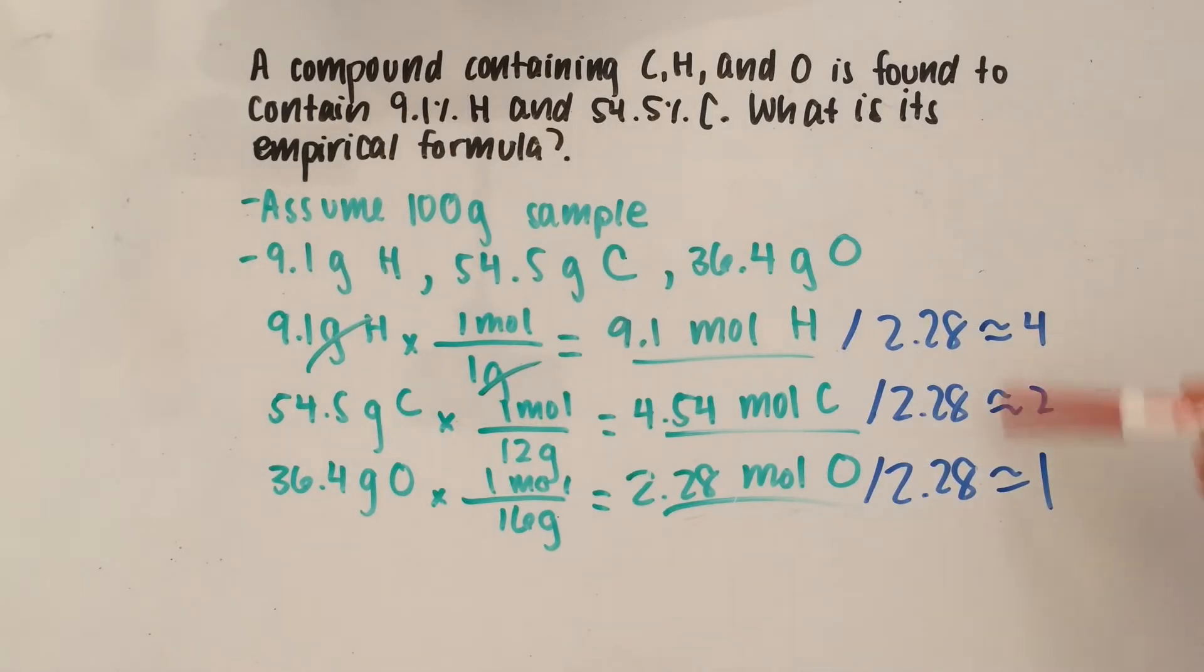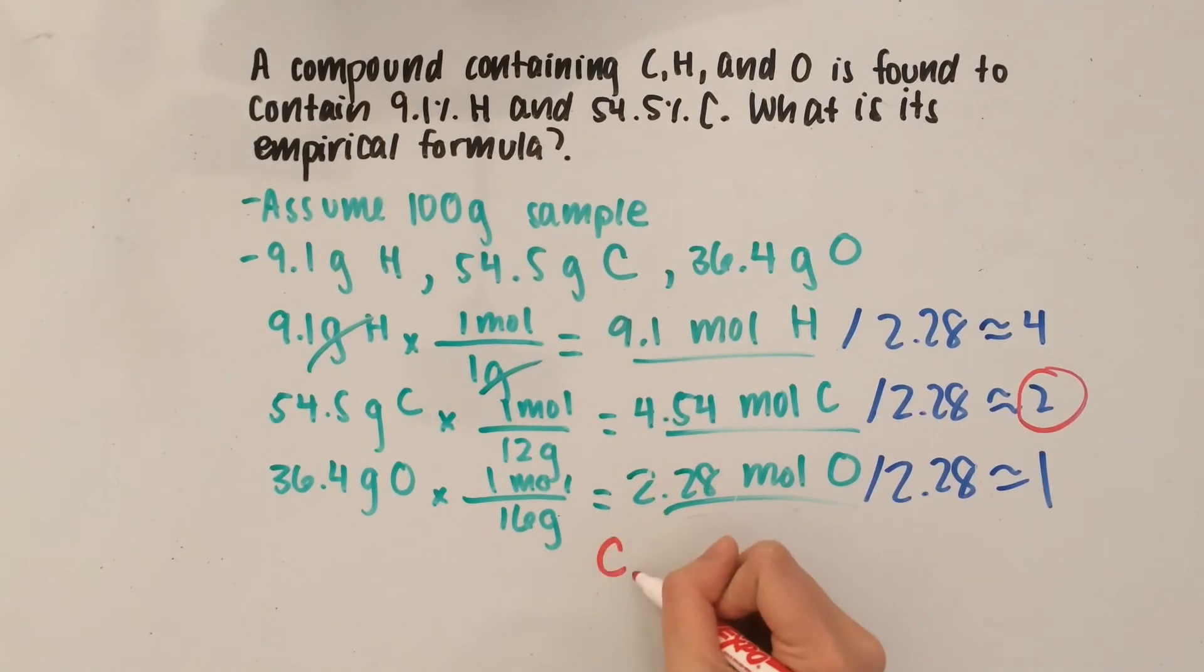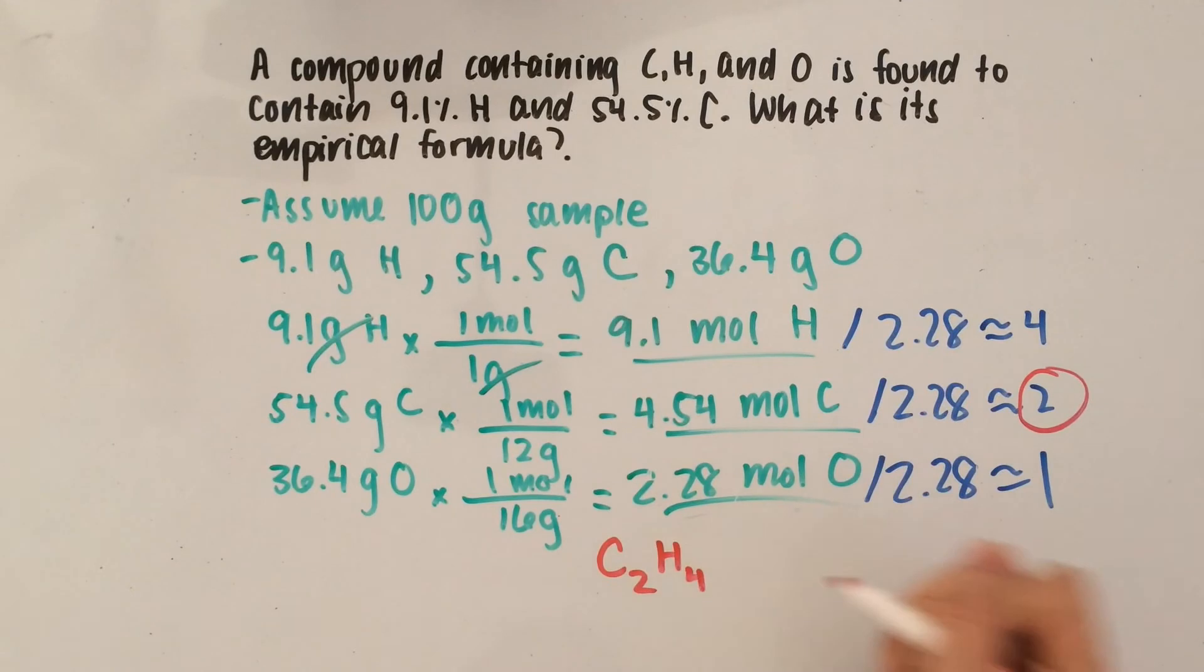So, what these numbers are telling us is that these are going to be the subscripts of the empirical formula. That means for carbon, we have a 2 here. So, we're going to write C2. Then, hydrogen has a subscript of 4, H4,